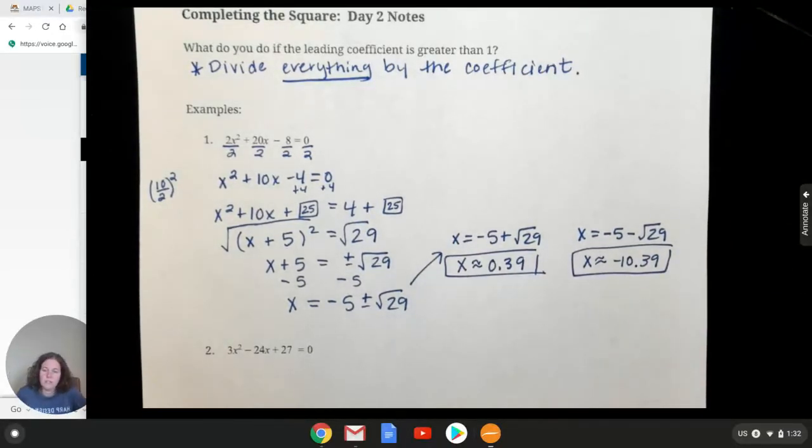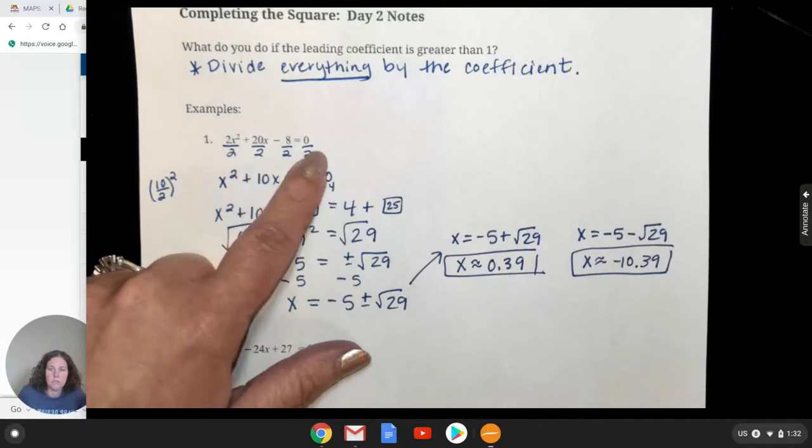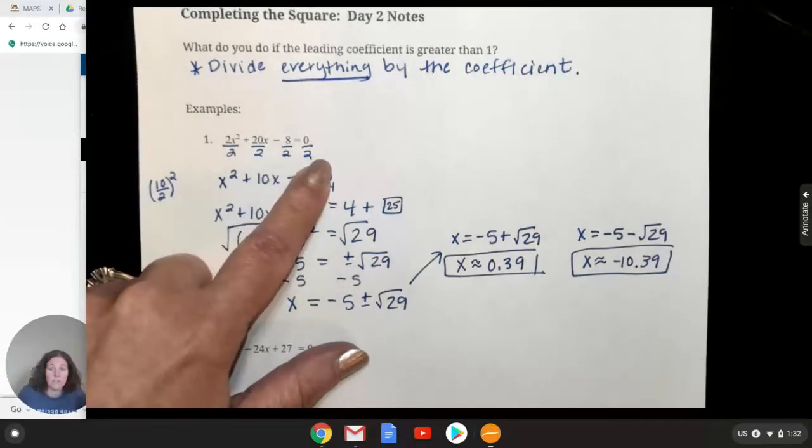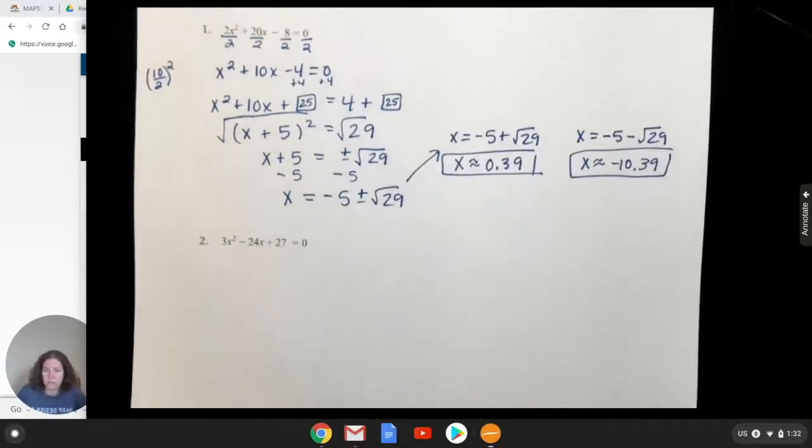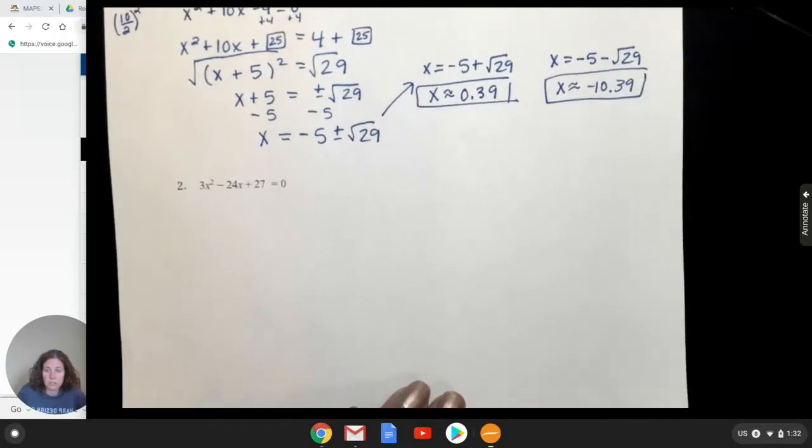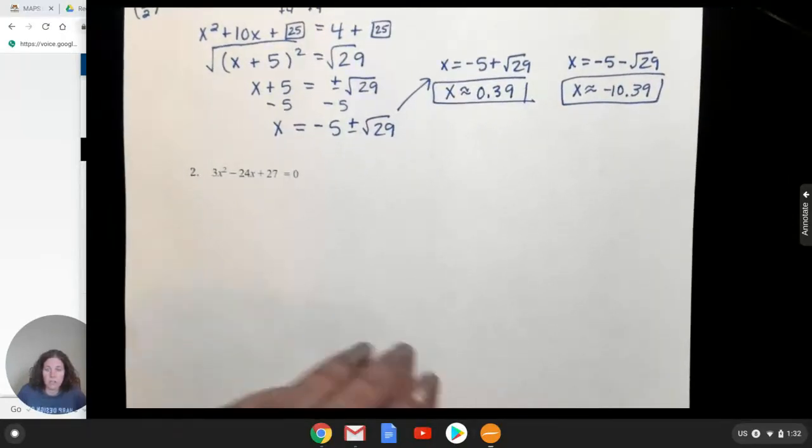Okay, so the only difference from what we've done earlier on in the week and in your last homework was that you had to get rid of the coefficient first by dividing everything by it. All right, then do the process. So what I'm going to encourage you to do is to pause the video right now and then try number two and then hit play again and see how you did.